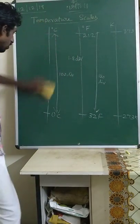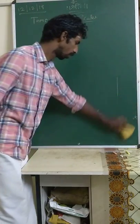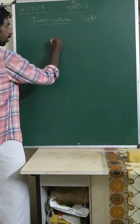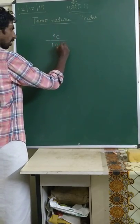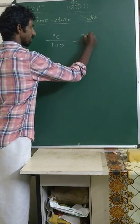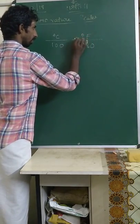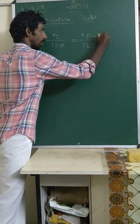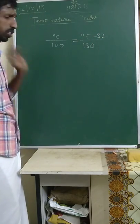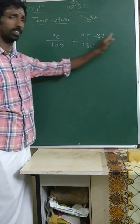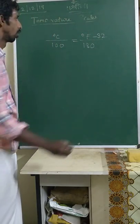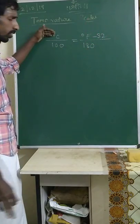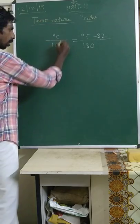Let us now derive a formula to convert between Celsius and Fahrenheit. We know that Celsius has 100 divisions and Fahrenheit has 180 divisions, and the Fahrenheit scale starts from 32. So we subtract 32 from the Fahrenheit value — if we put F = 32, then 32 minus 32 equals 0, giving Celsius = 0. The ratio is: (F − 32) / 180 = C / 100.